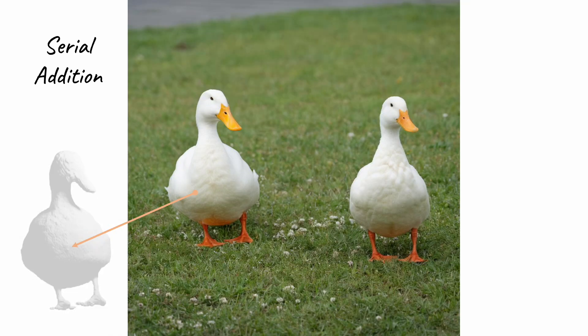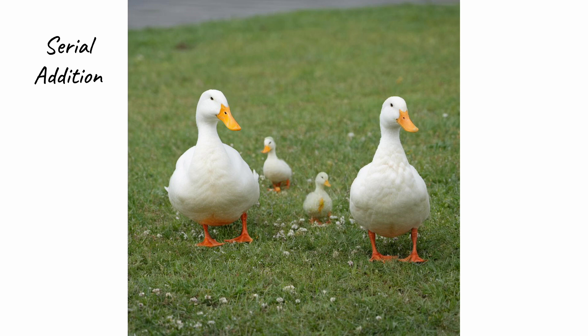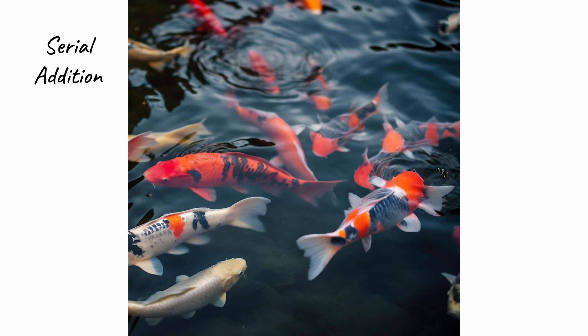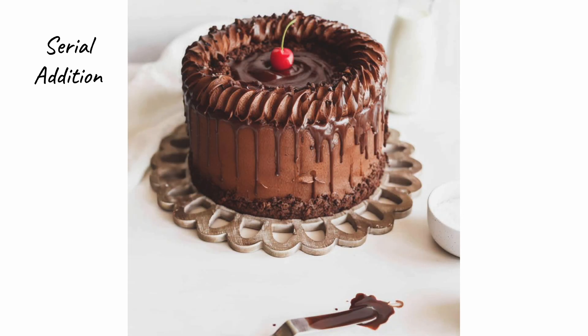Similar to composing 3D models, we can take meshes reconstructed from images and integrate them into the scene one by one. In this example, we have got a mesh from the duck, scaled it down, and then added it to the scene. Or we can keep adding fish to the pond, or we can add more cherry.